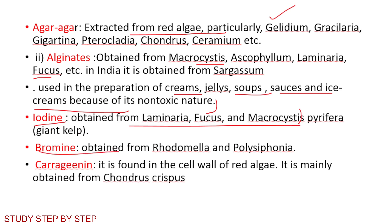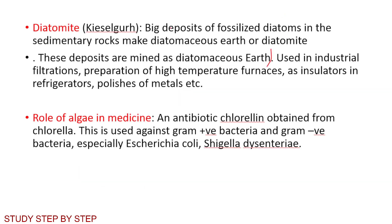Bromine is obtained from Rhodomela and Polysiphonia. Carrageenan is found in the cell wall of red algae and is mainly obtained from Chondrus crispus. Diatomite — or diatomaceous earth — consists of large deposits of fossilized diatoms in sedimentary rocks. Diatomaceous earth is mined and used in industrial filtration, preparation of high-temperature furnaces, as insulators in refrigerators, and for polishing metals.